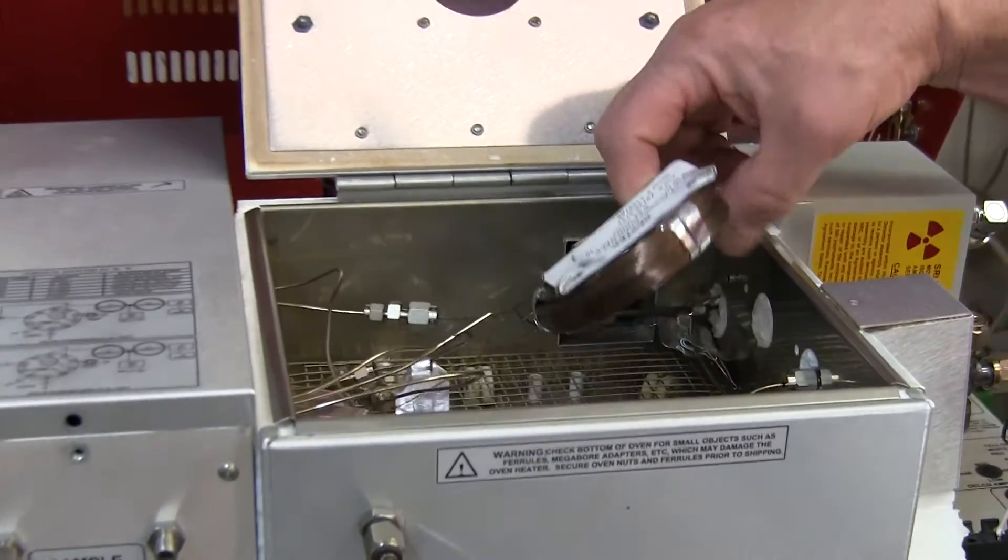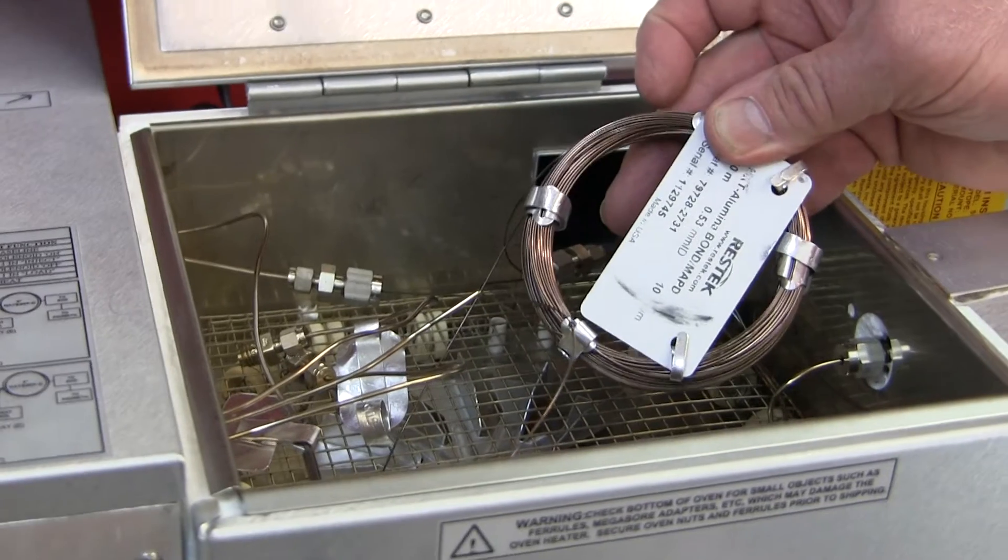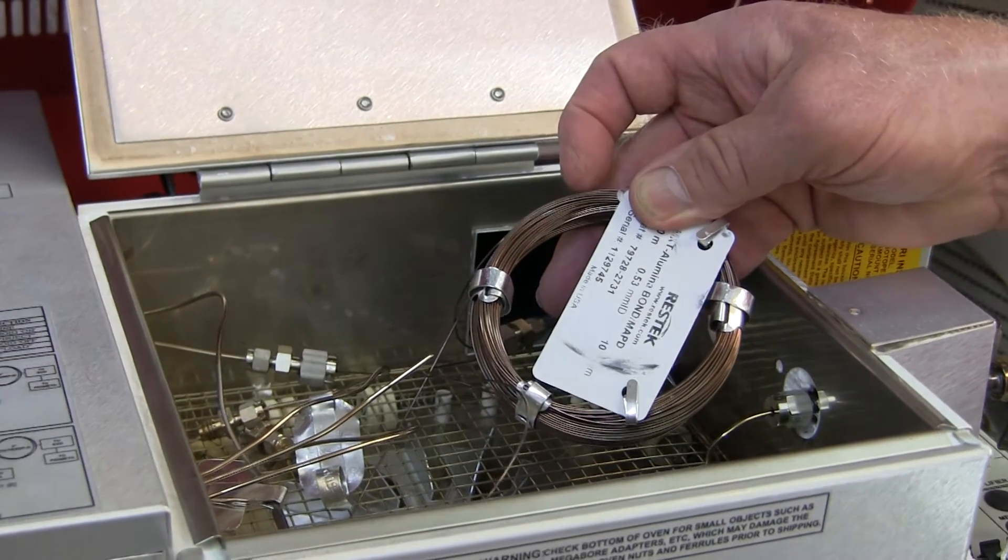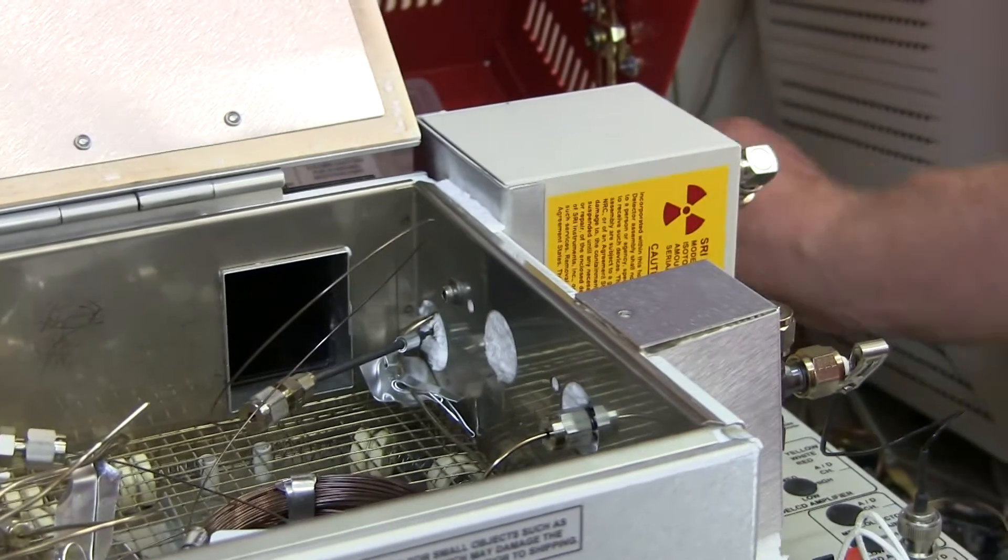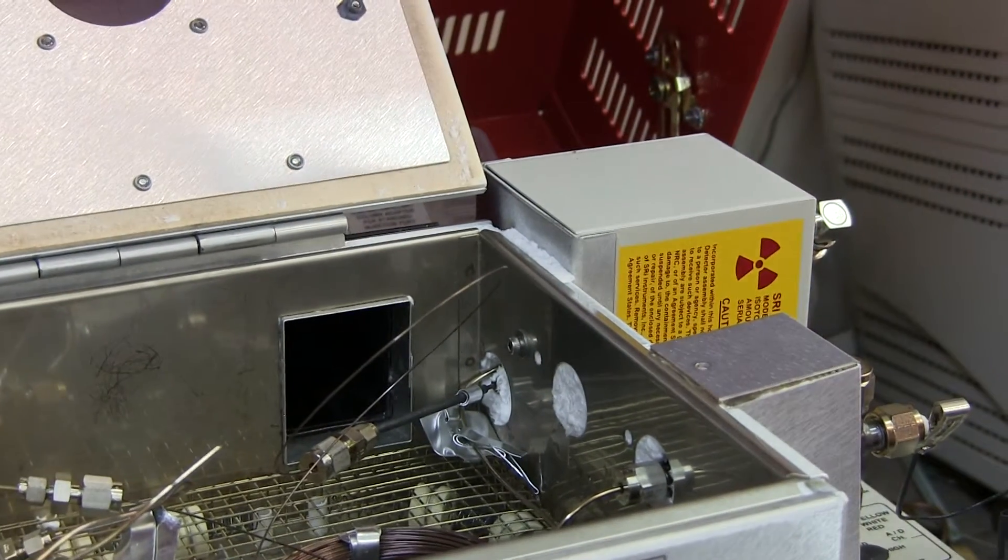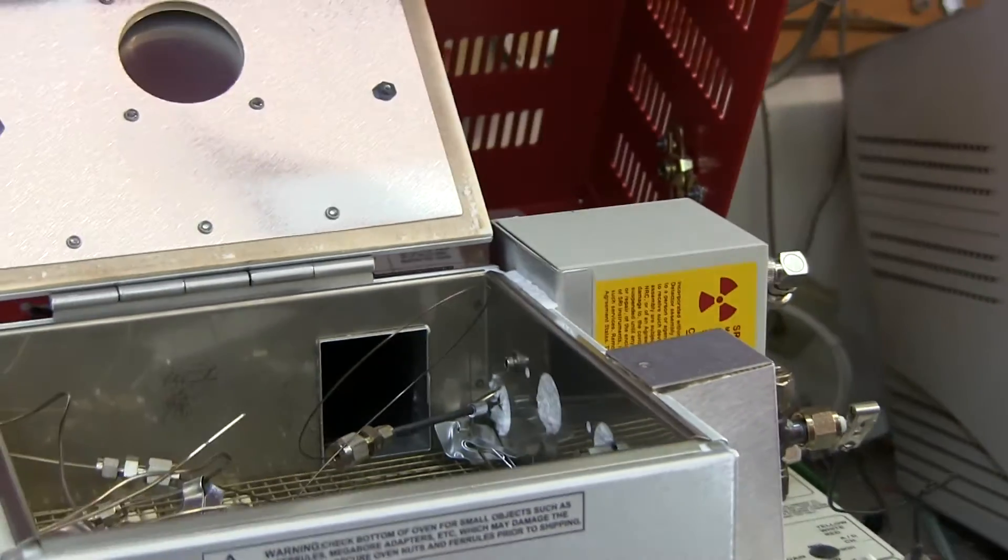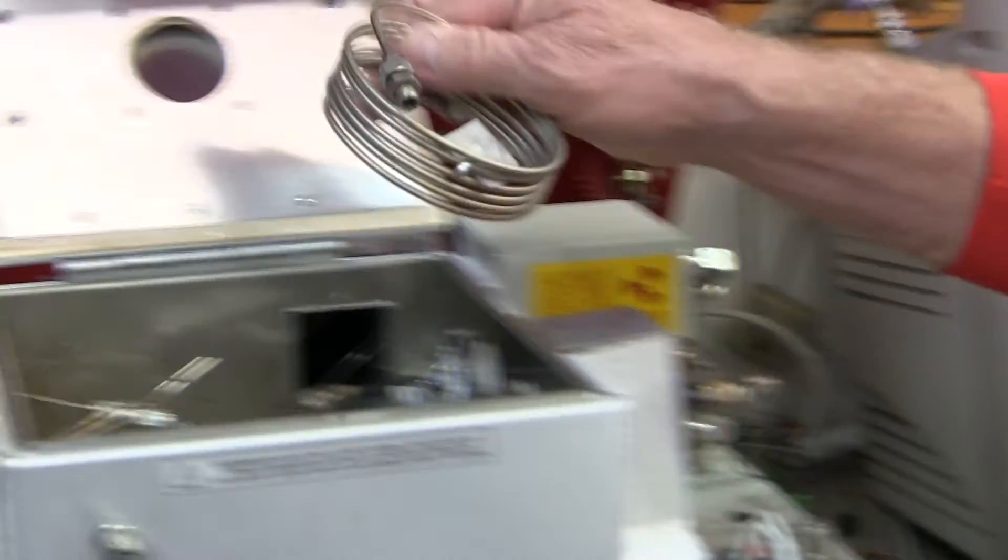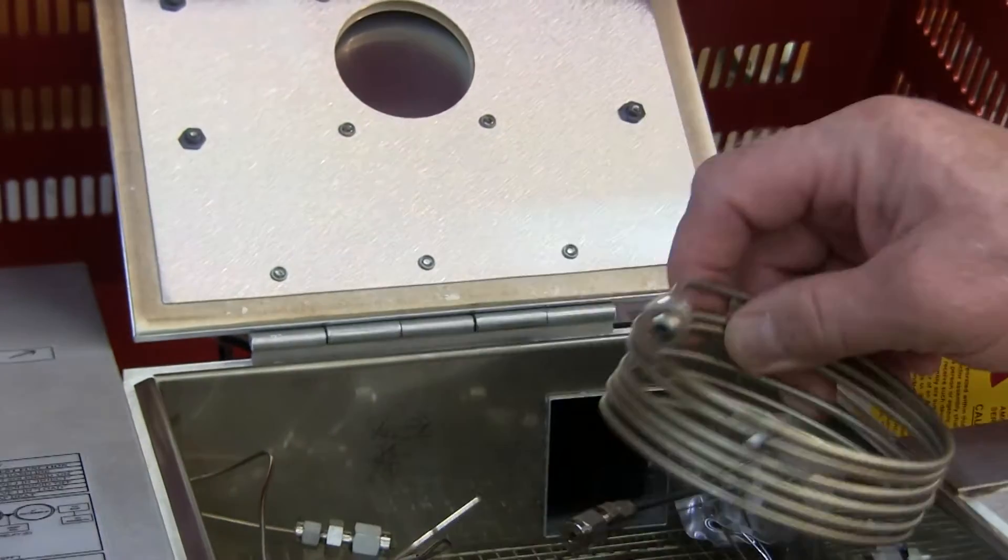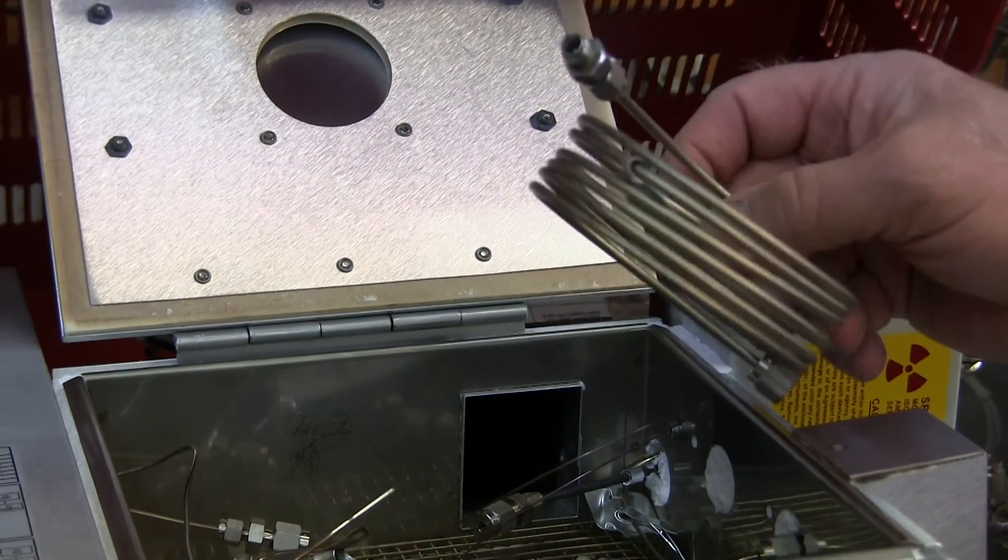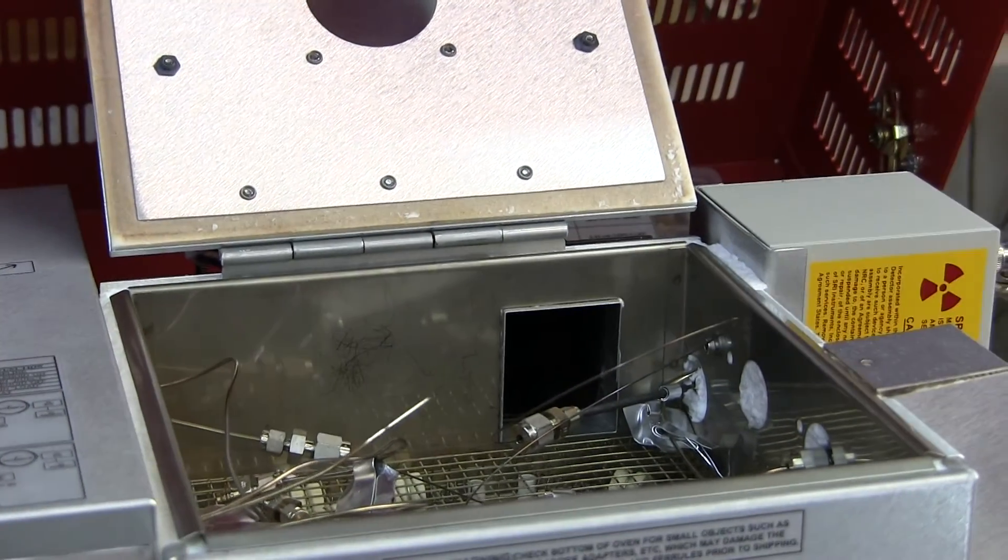The column oven is here and it's a very precise temperature controlled oven that can vary in temperature from ambient temperature to 400 degrees centigrade. Inside of the column oven, there's going to be some kind of column. It may be a capillary column like this or it may be a packed column that looks more like this. Columns come in all shapes and sizes and there's enough room in the column oven to put four or sometimes even five different columns.